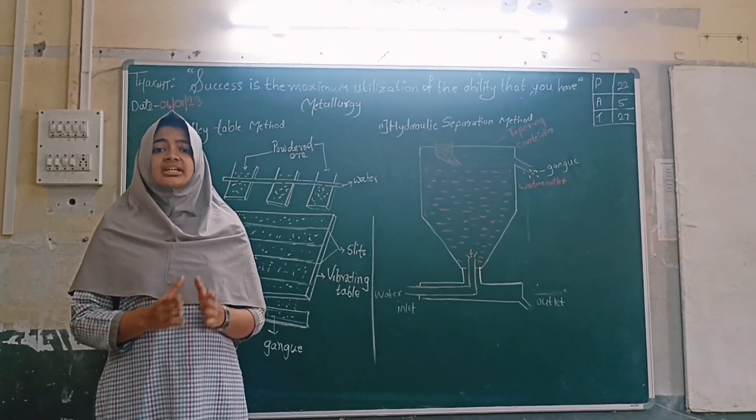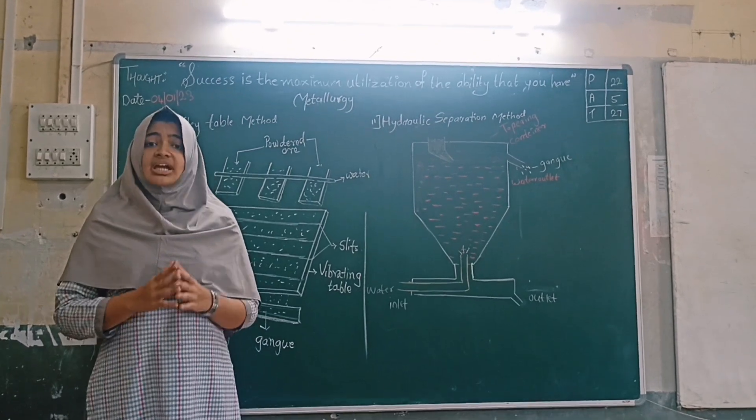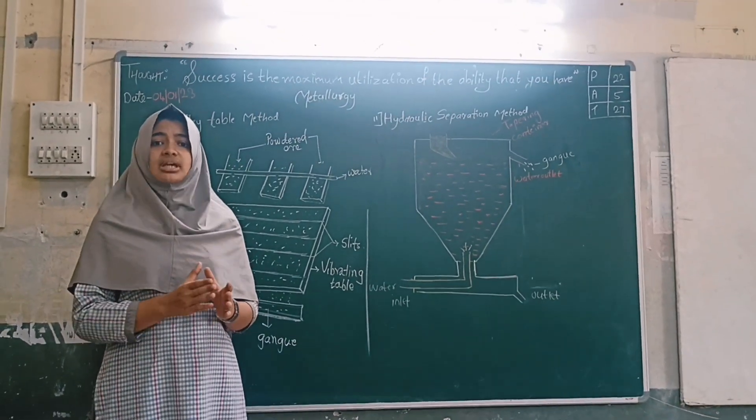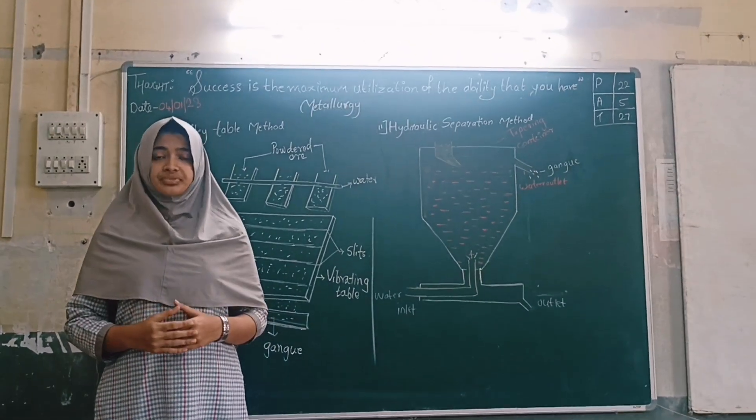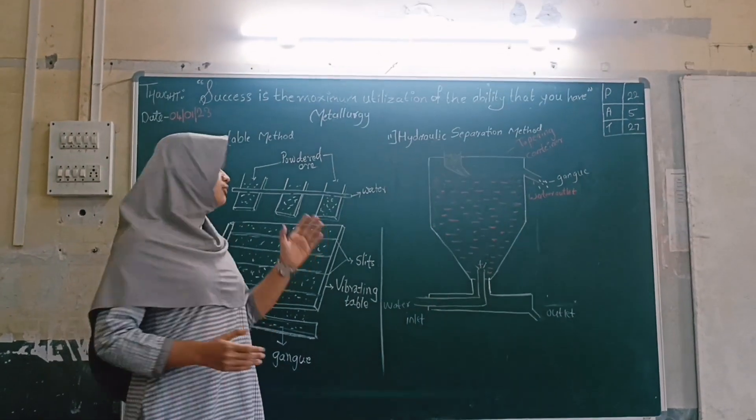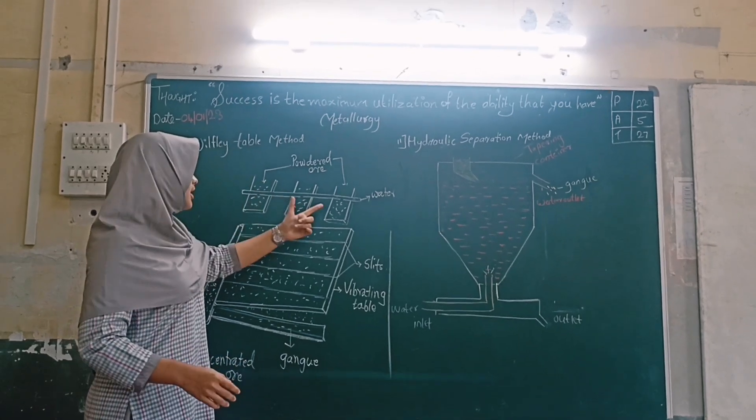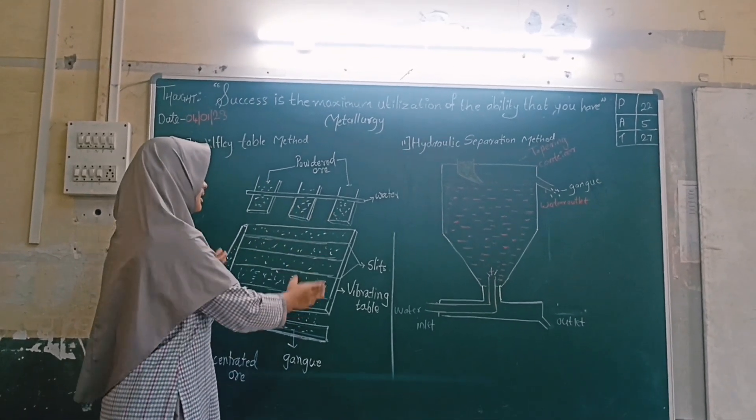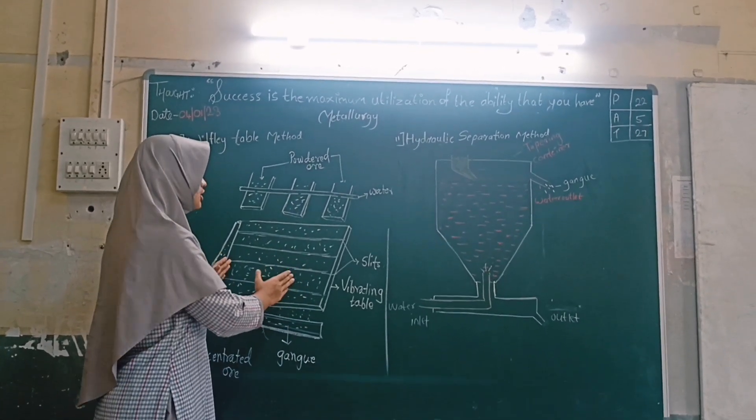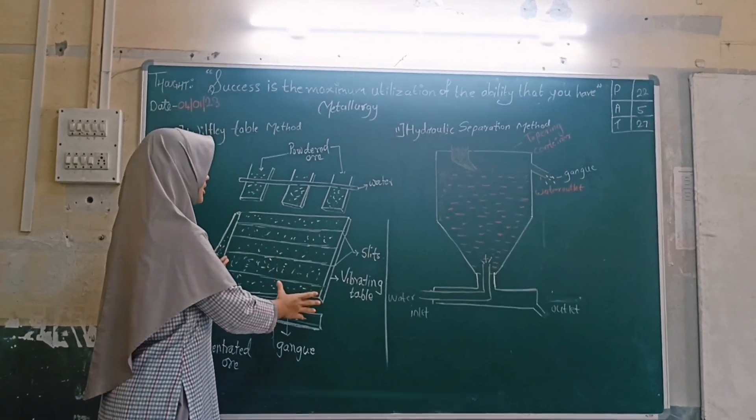First we will study separation based on gravitation. In this process gravity is used to separate metal from the ore. First is Wilfley table. Here you can see three containers and pipes connected to them. This is the table. This table will be continuously vibrating.